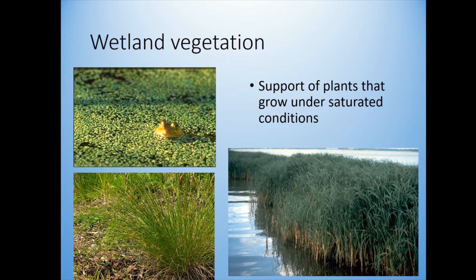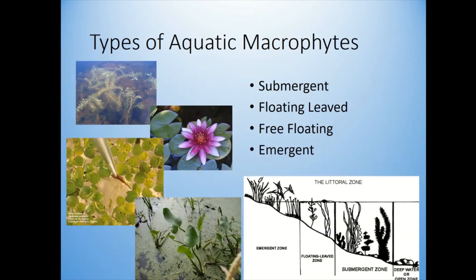For a wetland to be a wetland it also needs to have wetland plants — plants that grow under saturated conditions. There's a giant database of all plants that grow in and outside of wetlands. We're talking about all sorts of types: truly submergent plants growing underwater, floating-leaf plants like lily pads, emergent plants, and free-floating plants like duckweed.